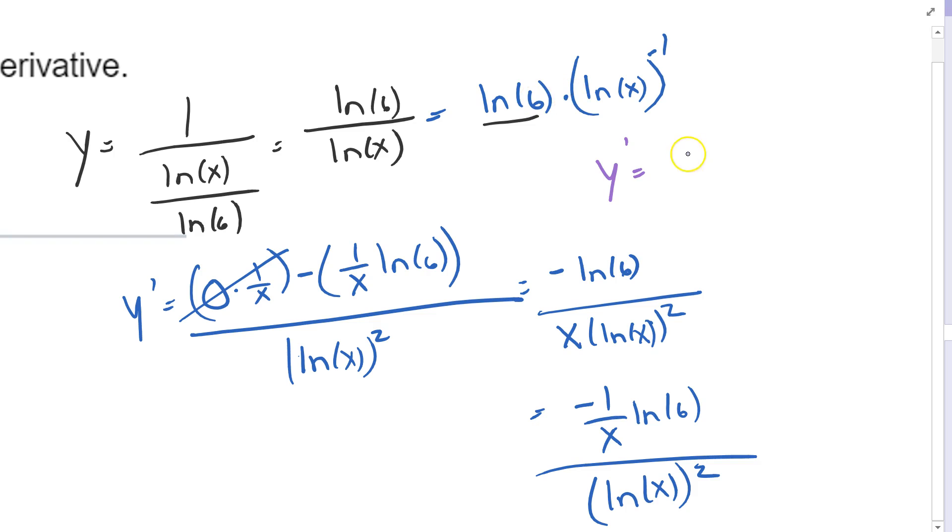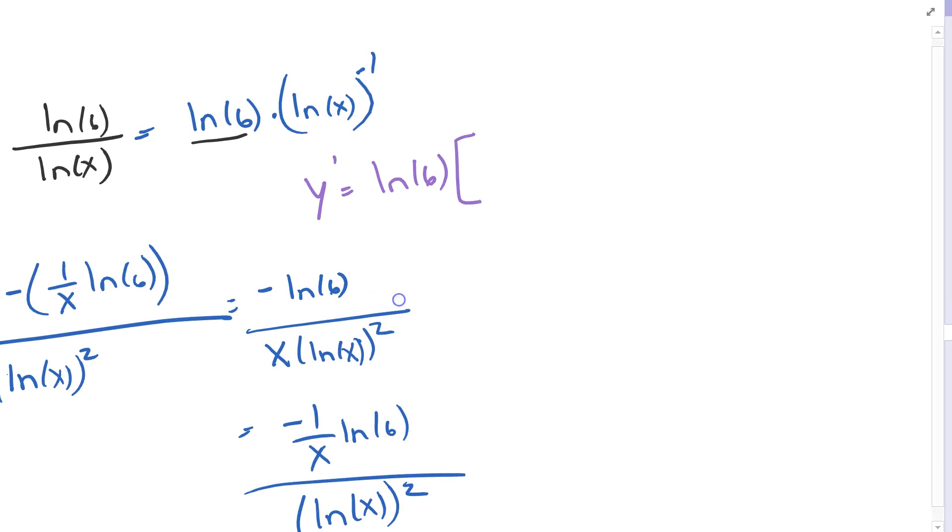So if I want to take the derivative here, I would take y prime, it's going to be, I leave the constant out front, and then I take the derivative of the outside function, which in this case would be something to the minus 1, so this would be minus 1 times ln of x quantity minus 2 power, times the derivative of the inside function. In this case the inside function is ln of x, so the derivative is 1 over x.